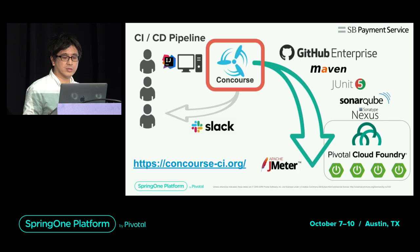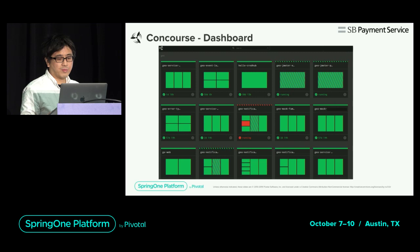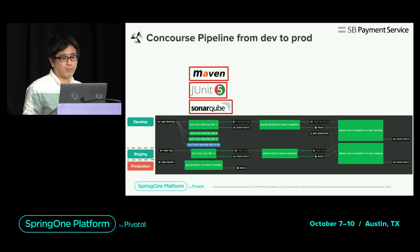This is the top screen of Concourse. Each frame represents a job pipeline, and the green and red squares inside represent the tasks that make up the pipeline. A square animated with diagonal lines represents the task being executed. This is the actual top pipeline we are using. A push to the GitHub branch triggers the job. In that job, Maven runs unit tests with JUnit 5 and SonarQube performs static code analysis.